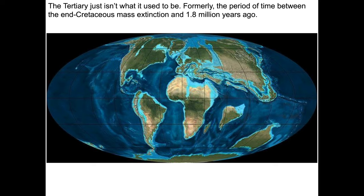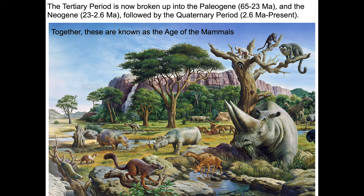This was formerly the period of time between the end of the Cretaceous, when the mass extinction occurred, and about 1.88 million years ago. Now the Tertiary period is broken up into the Paleogene from 65 to 23 million years ago, and the Neogene from 23 to 2.6 million years ago, followed by the Quaternary period from 2.6 million years ago to the present. For some stratigraphic reason, the Tertiary period has been eliminated and renamed. The Quaternary period remains with the same name, but a different time scale.